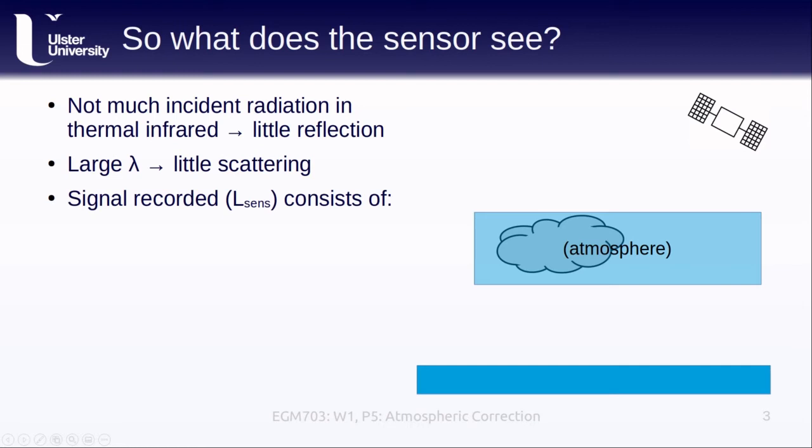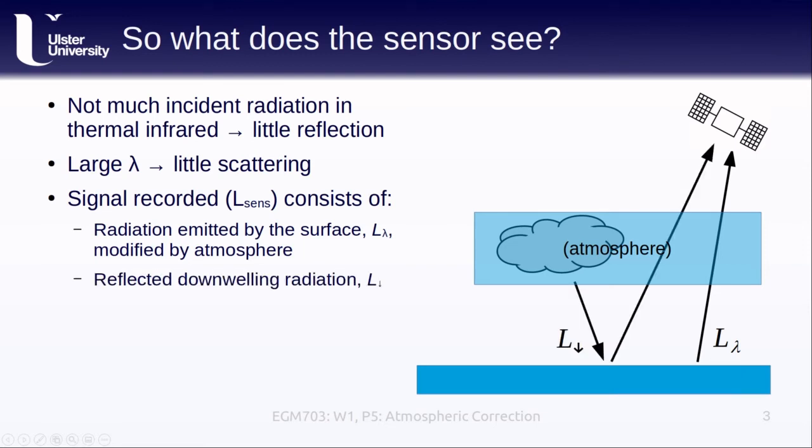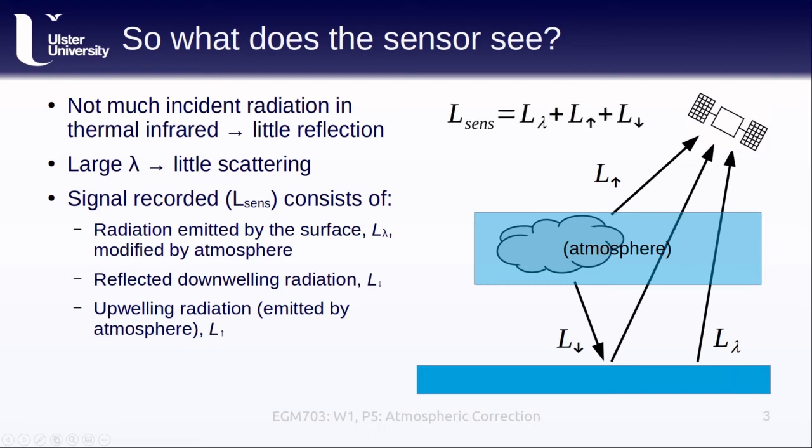All of this means that the signal we actually record in the thermal infrared consists of the radiation emitted by the surface, modified by atmospheric transmission. This is the thing that we actually want to measure. We also have a component that is the reflected downwelling radiation. This is radiation that is emitted by the atmosphere, or by clouds, and then reflected by the surface, modified by transmission through the atmosphere. Finally, we also have the upwelling radiation, which is the radiation that is emitted by the atmosphere. We can write this equation, which just says that the signal recorded by the sensor is the sum of these three components.